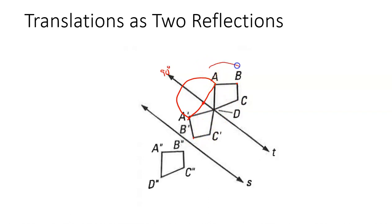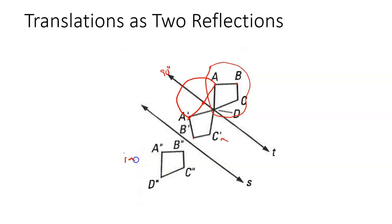Look at these two drawings. The preimage is oriented so that A, B, C, D goes clockwise. But in the reflection, A prime, B prime, C prime, D prime goes counterclockwise — reflections reverse orientation. However, if you take A prime, B prime, C prime, D prime and reflect it again across a second line S, the final image A double prime, B double prime, C double prime, D double prime goes back to being clockwise, matching the orientation of the original.